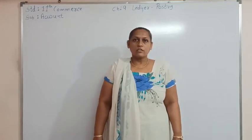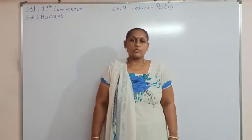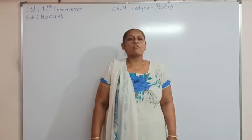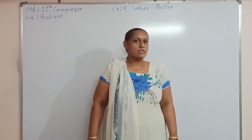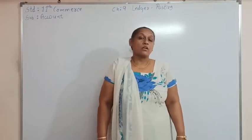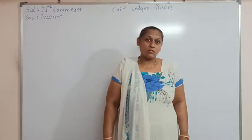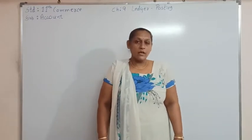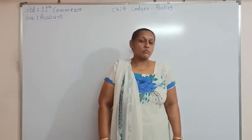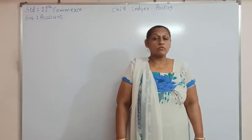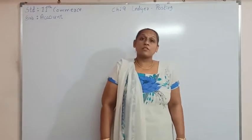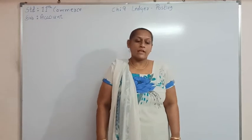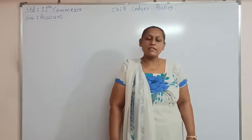Hello students, today we are going to see Chapter Number 9, Ledger and Posting of Standard 11 Commerce Subject Accounts. This is the 7th part of the chapter and today we are going to see posting from the subsidiary book. Today we are going to see the subsidiary book in which the column for the goods as well as expense is given.